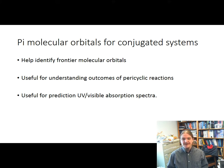These pi molecular orbitals can help us identify frontier molecular orbitals, which is what the next video is going to be about, but those frontier molecular orbitals are useful for understanding the outcome of pericyclic reactions, which are a type of reactions that only conjugated molecules can do, and then finally are also useful for the prediction of UV visible absorption spectra, and there's going to be a video coming up on that.